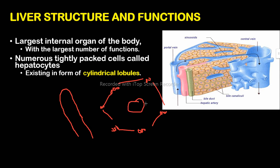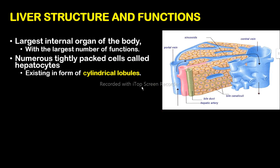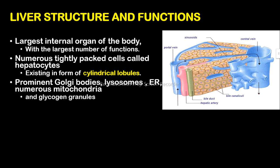There is one central vein which is large, and then peripheral vessels: one portal vein, one hepatic artery, and one bile duct. Since there are three of them collectively, they are referred to as triads. That is the basic structure of the liver. These hepatocytes are arranged in those cylindrical lobules, which are the functional units of the liver — that is where all the functions take place.